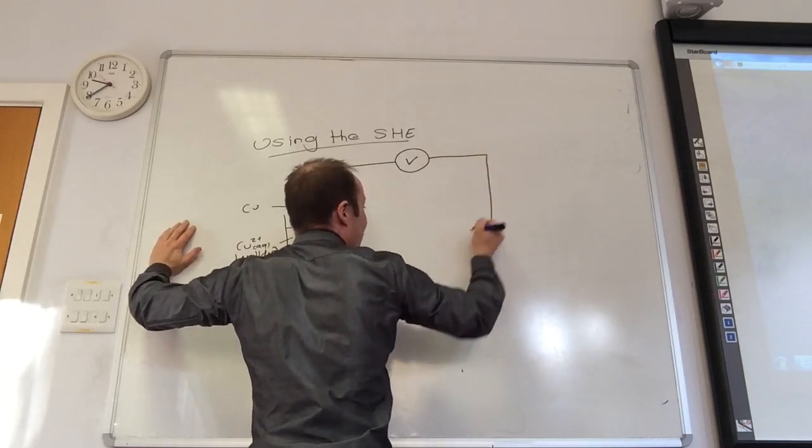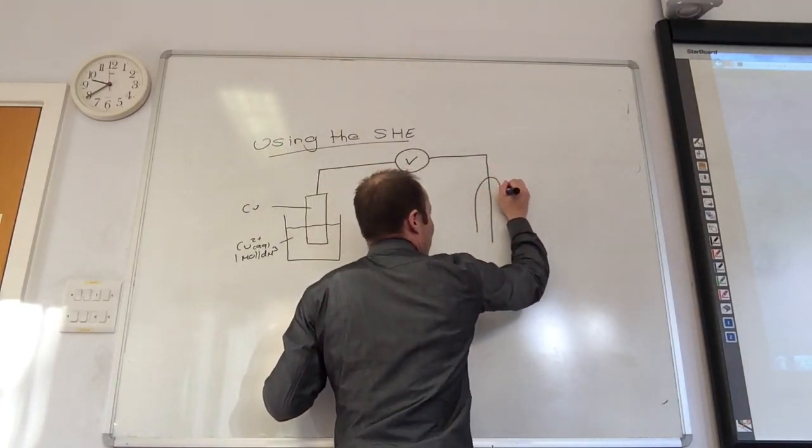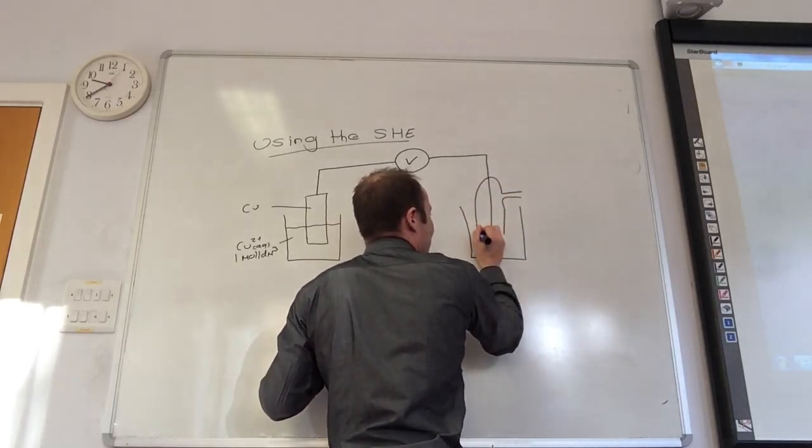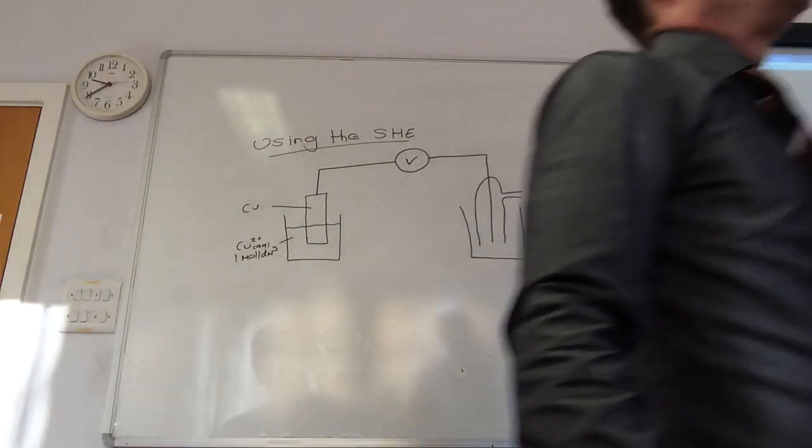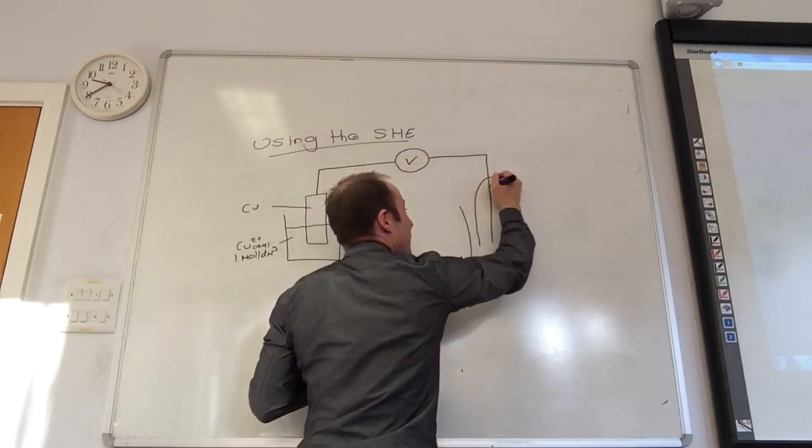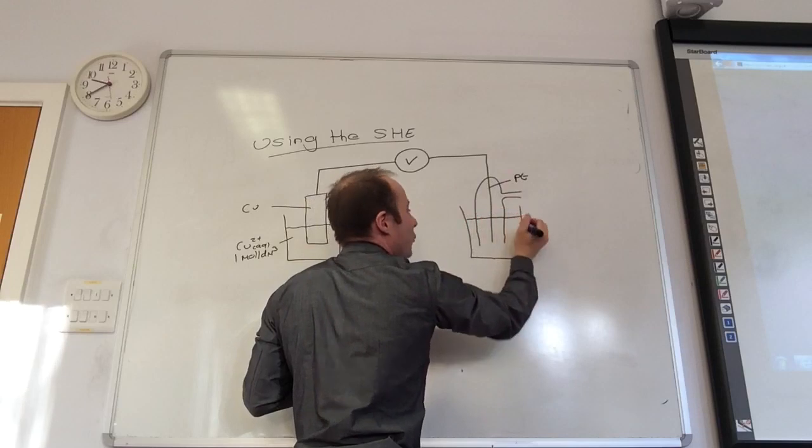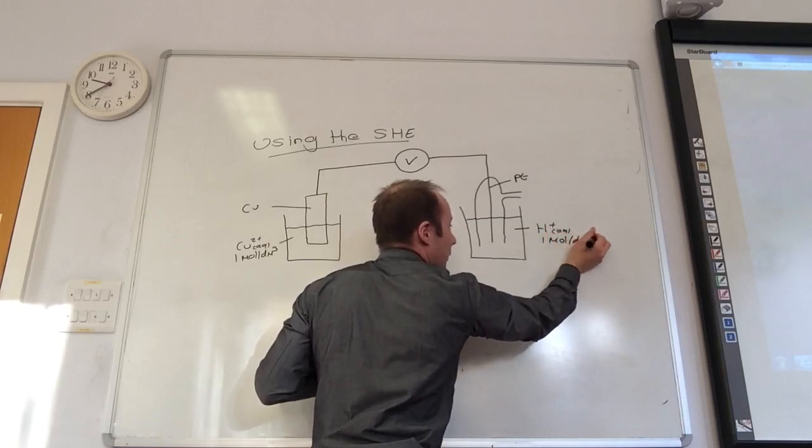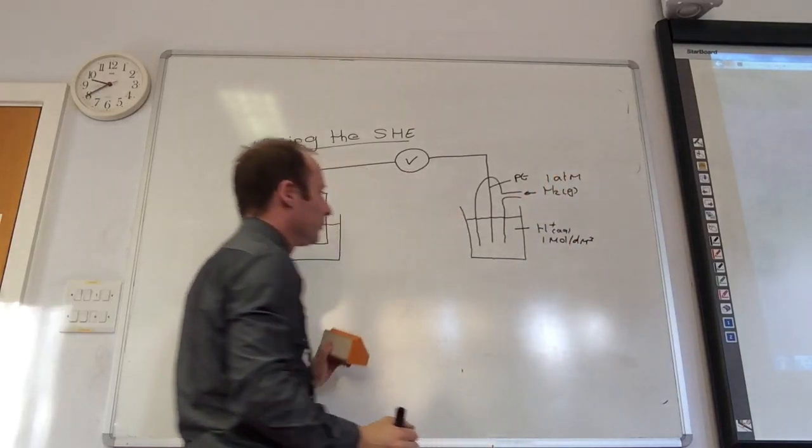I then connect that with a wire to a voltmeter. The other side of my voltmeter is going to be connected to my standard hydrogen electrode. The voltmeter is made up of platinum wire. The voltmeter is just like a standard voltmeter like you've been using, and you attach platinum wire to it. The platinum wire is only this little bit here.